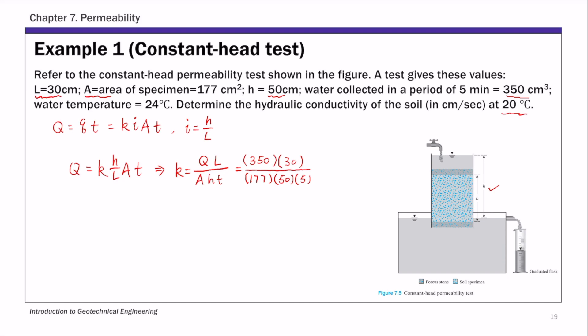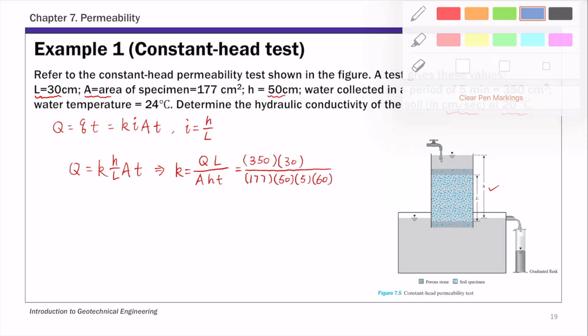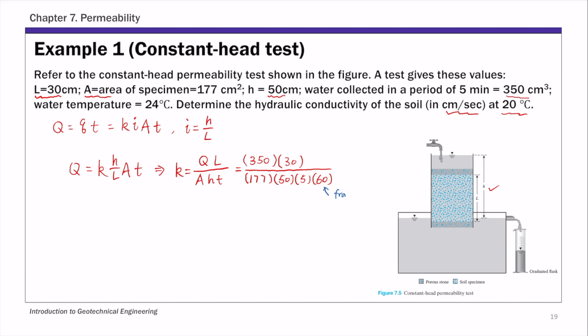That gives you centimeters per minute. To convert to centimeters per second, we divide by 60 — that's the unit conversion from minutes to seconds. Working out all these numbers, K at 24 degrees C is 3.95 times 10 to the negative 3 centimeters per second.